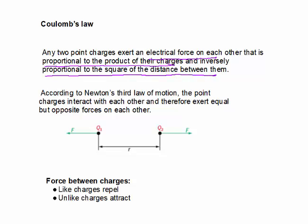What does this mean? We have here two point charges Q1 and Q2 separated by a distance R. Each of these charges exerts a force — we call this the electrical force because it is due to electric charge. So each charge exerts a force on the other: Q2 will exert a force on Q1, and Q1 will exert a force on Q2.